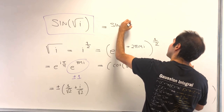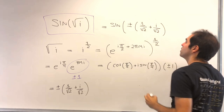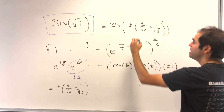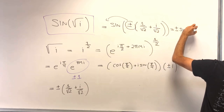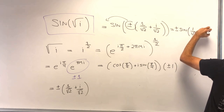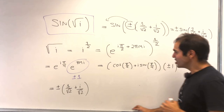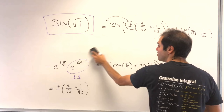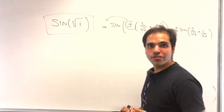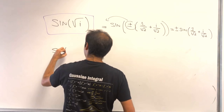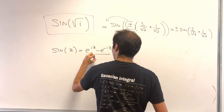We need to calculate sine of ±(1/√2 + i/√2). The good news is sine is an odd function, so this is the same thing as ±sine(1/√2 + i/√2). How do you evaluate those complex values of sine? For this, you need complex exponentials. In general, sine of z is (e^(iz) − e^(−iz)) / 2i.